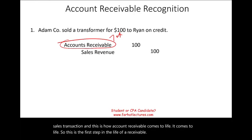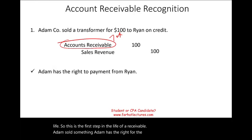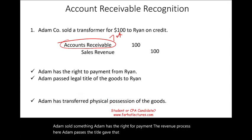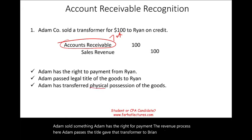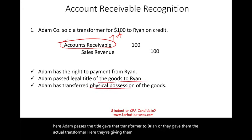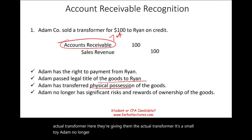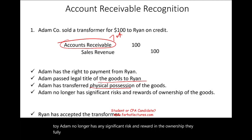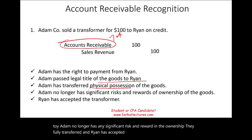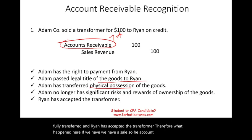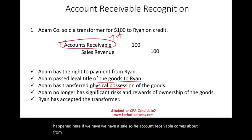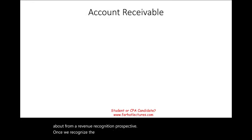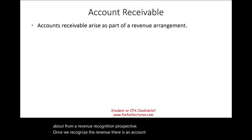Adam sold something and has the right to payment. There's a revenue process: Adam passes title and gives the transformer to Ryan. Adam no longer has any significant risk and reward in the ownership — they fully transferred it, and Ryan has accepted. Therefore the account receivable comes about from a revenue recognition perspective: once we recognize the revenue, there is an account receivable. It arises as part of the revenue arrangement when you satisfy your performance obligation.